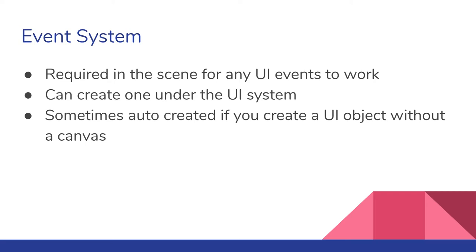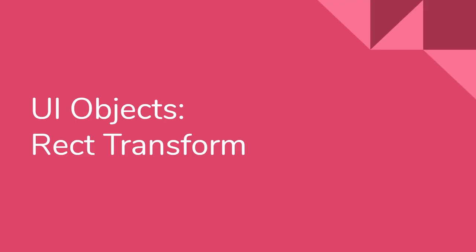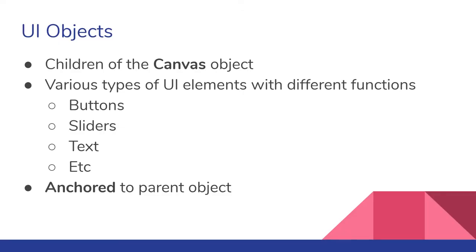When you create a canvas, you also want an Event System. It's usually created automatically when you create a UI element, but sometimes if you just create a canvas by itself it won't. You can find it under the UI menu when creating objects. That was the introduction to the canvas — the canvas is a container, and the UI objects are what's contained by the canvas.